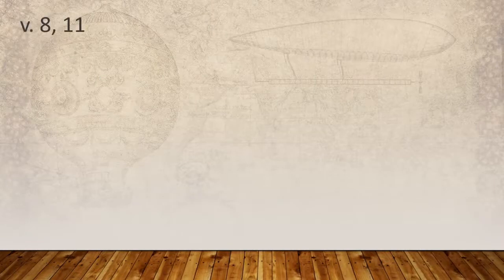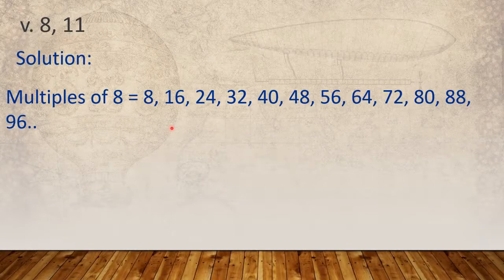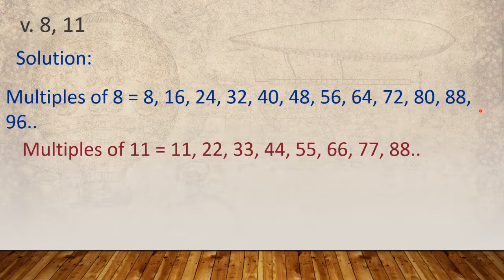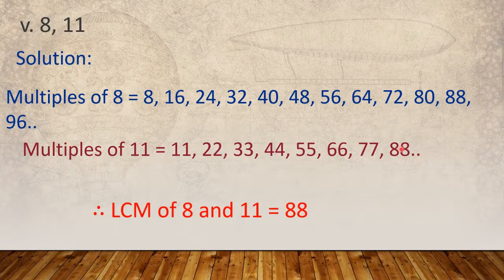Question number 5: Find the LCM of 8 and 11. Multiples of 8: 8, 16, 24, 32, 40, 48, 56, 64, 72, 80, 88, and so on. Multiples of 11: 11, 22, 33, 44, 55, 66, 77, 88, and so on. Here you can see 88 is the lowest common multiple. Therefore, LCM of 8 and 11 is equal to 88.